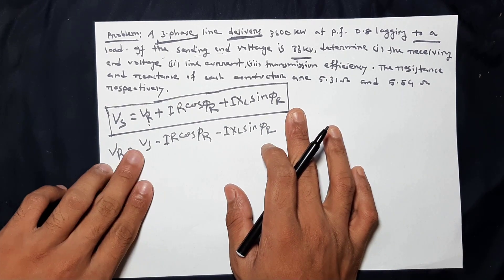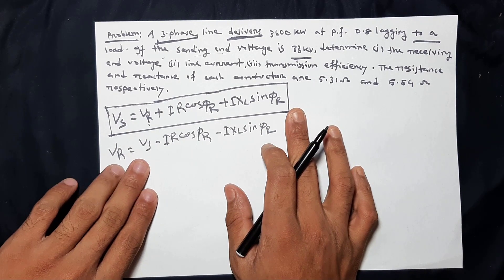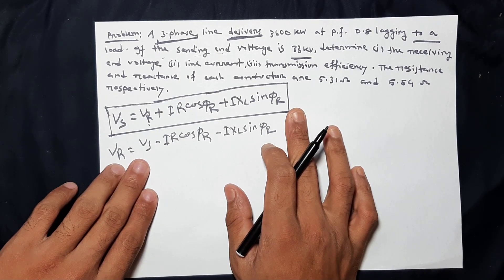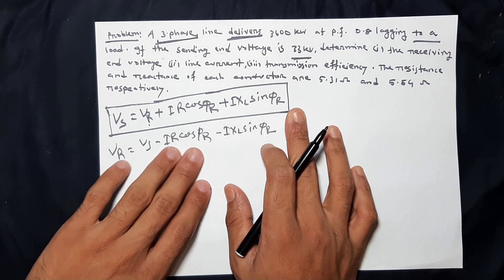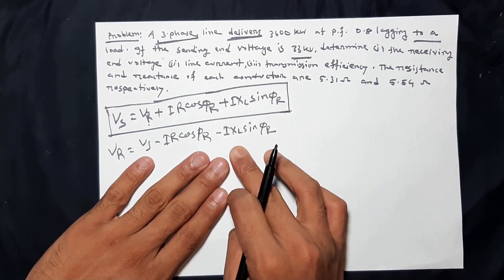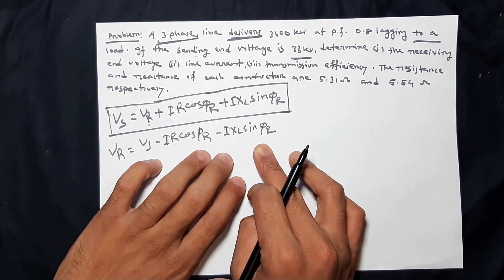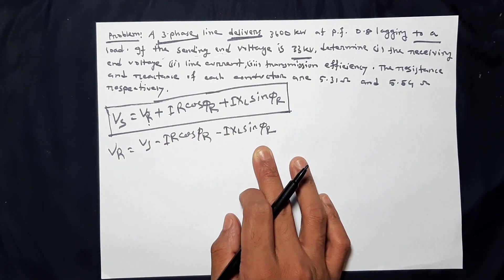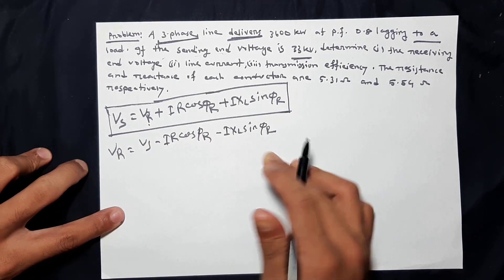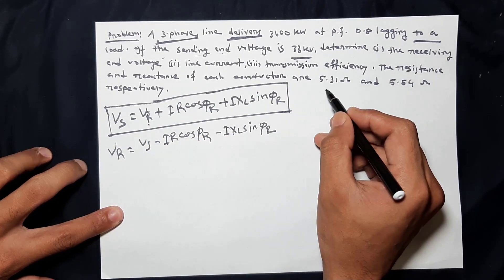VS — sending end voltage, lagging. I lag, R lag, cosφ lagging power factor. XL or sinφ. So let's see. The R value is the given resistance.